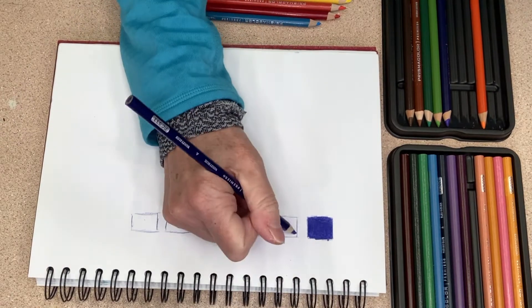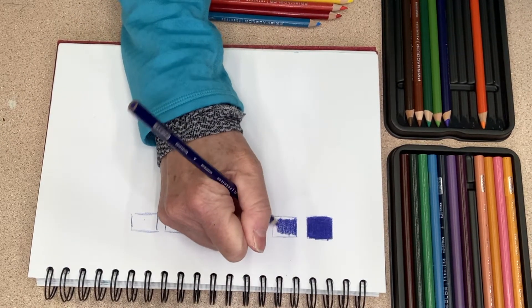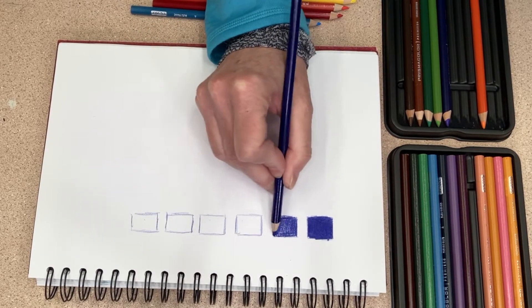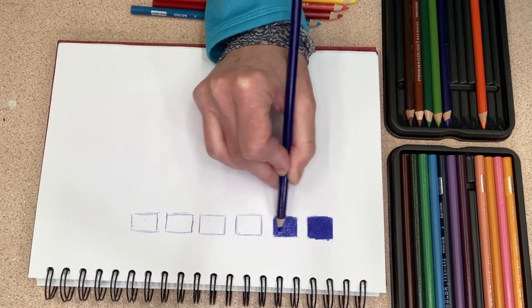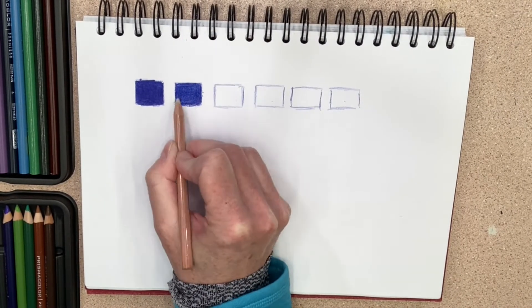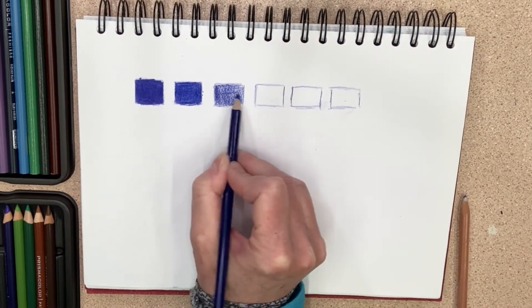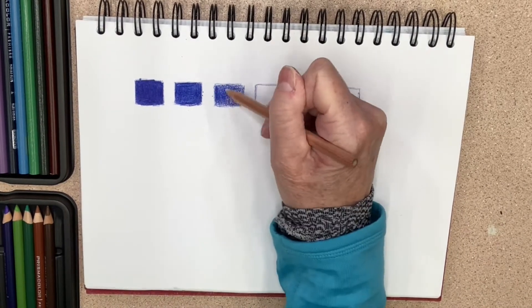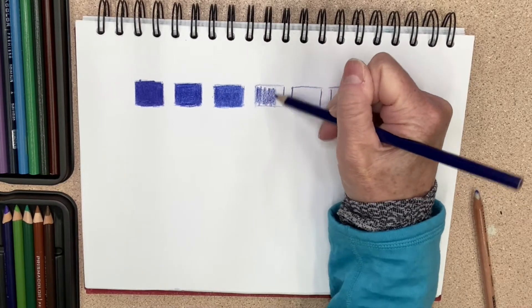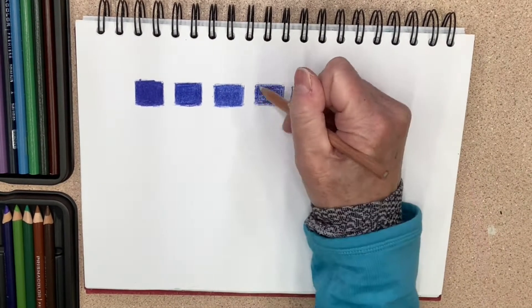And then in the next box, I will just ease up a bit on the pressure to create a lighter version of the indigo. I'm using a colorless blender by Prismacolor here to just blend in the color I've already put down. With each box, I am letting up on the pressure to create a lighter value in every box.